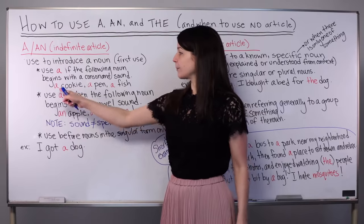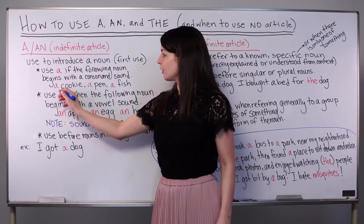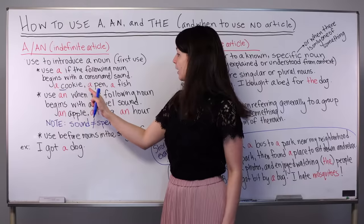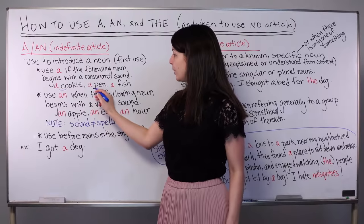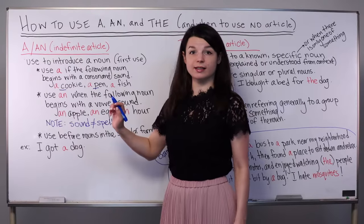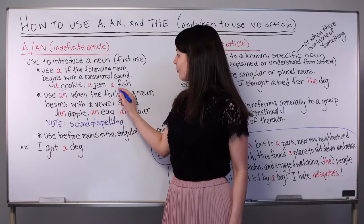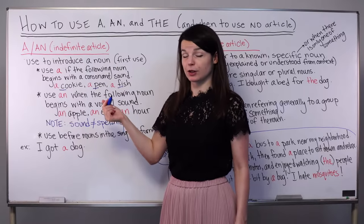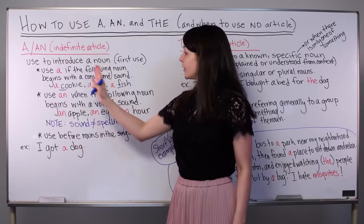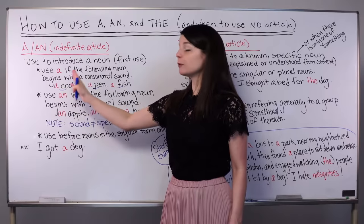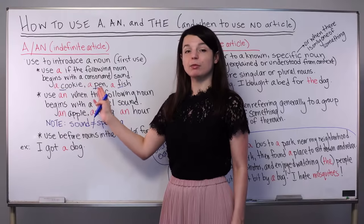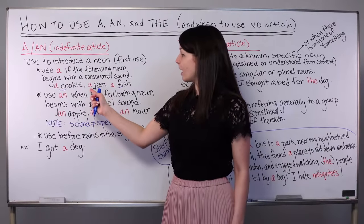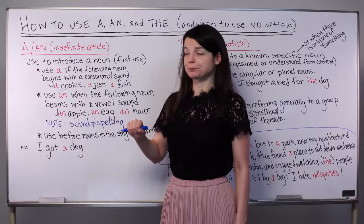Some examples of using a with a consonant sound: a cookie — this begins with a consonant sound. A pen — this is a consonant sound. And a fish — this is also a consonant sound. So if the following noun begins with a consonant sound, we should use the indefinite article a.